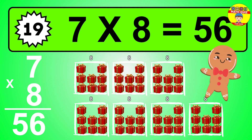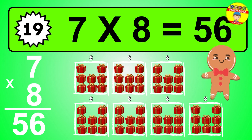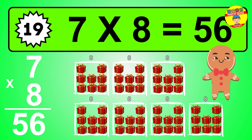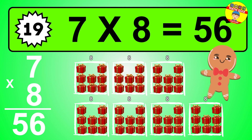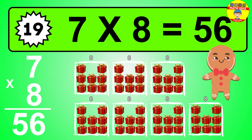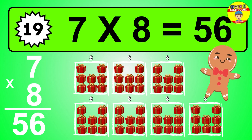To calculate, we have seven groups with eight balls each one. So how many balls do we have? Fifty-six balls.